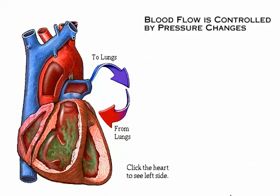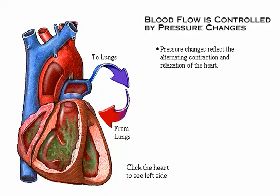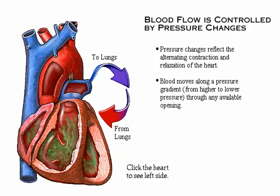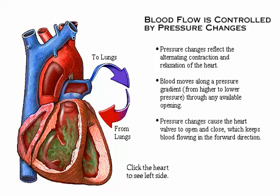Remember that pressure changes reflect the alternating contraction and relaxation of the heart. Blood moves along a pressure gradient from higher to lower pressure through any available opening. Pressure changes cause the heart valves to open and close, which keeps blood flowing in the forward direction.